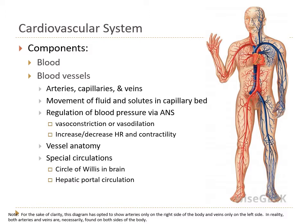So blood, you'll recall, is a specialized connective tissue — it's liquid connective tissue. The liquid ground substance is plasma, and then we have the formed elements, which are erythrocytes, leukocytes, and platelets, also called thrombocytes. We've talked about all of the solutes in plasma, as well as the three important plasma proteins: albumin, fibrinogen, and globulins, also known as antibodies.